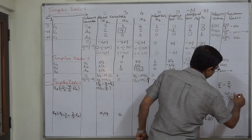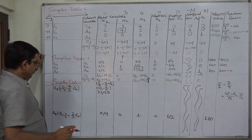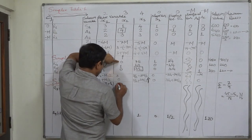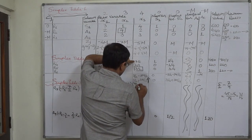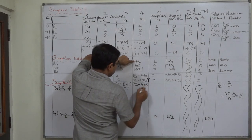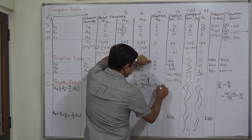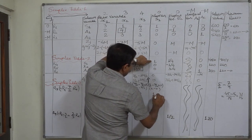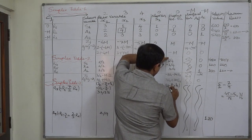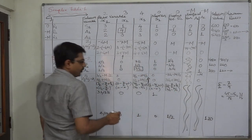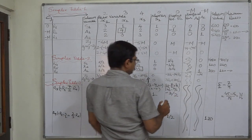Continuing: 45/18 − 14/18 = 31/18. Next element: 0 − (7/2)×0 = 0. Then 1 − (7/2)×(2/9): 18/18 − 12/18 = 6/18... giving values including −3/2 for one element. Finally: 480 − (7/2)×120 = 480 − 420 = 60.